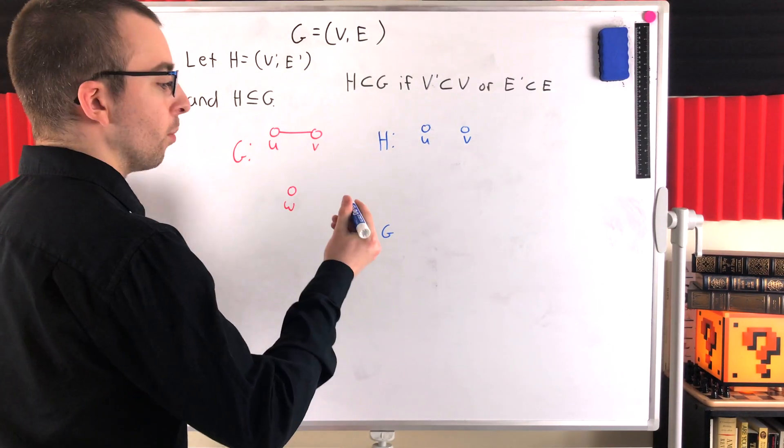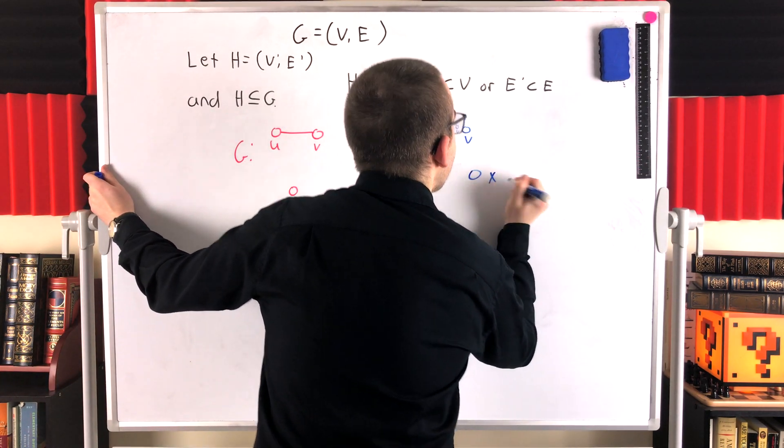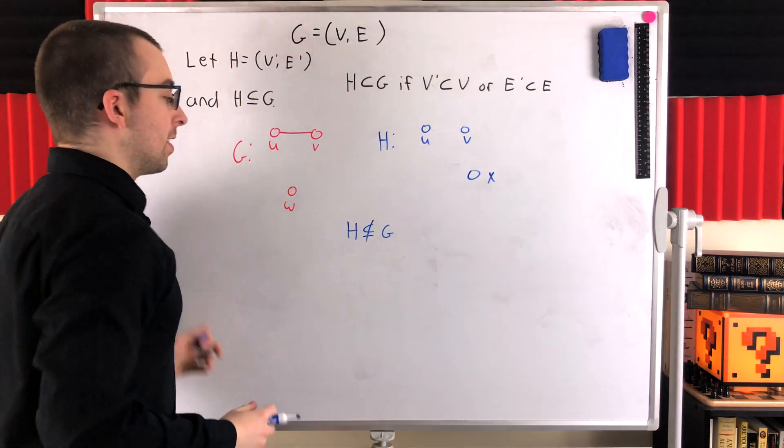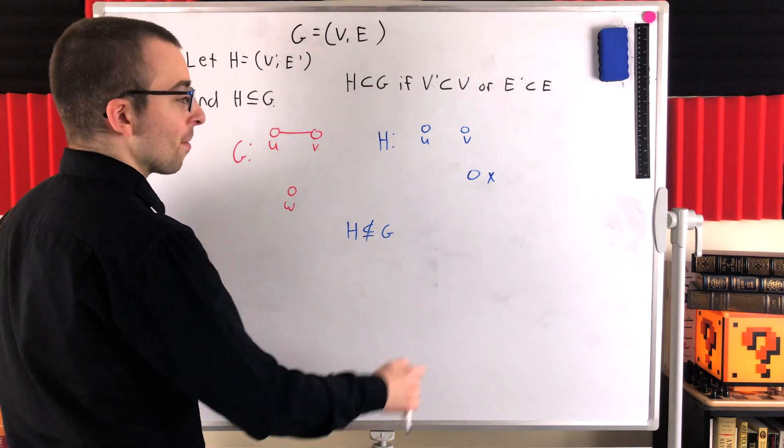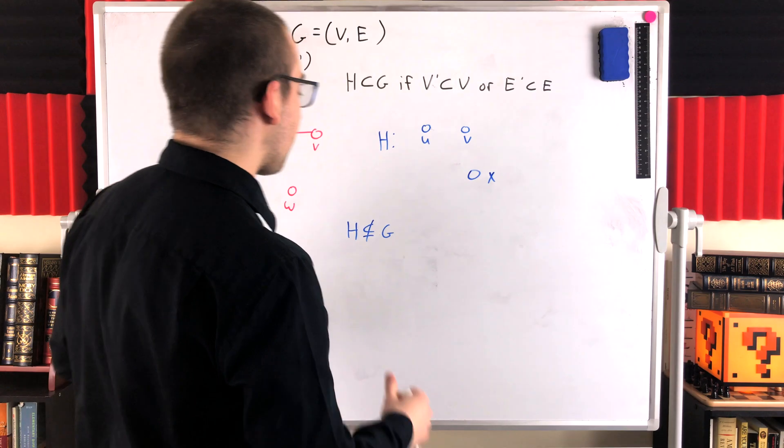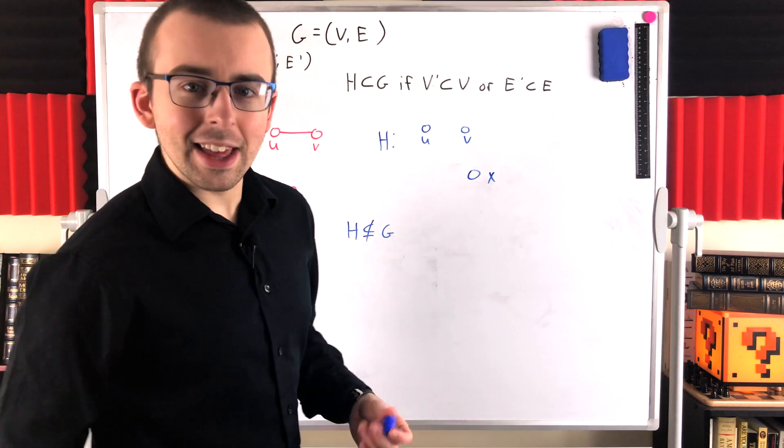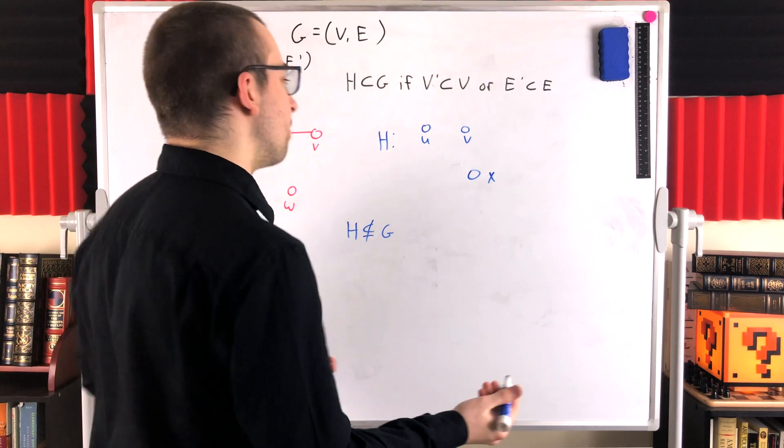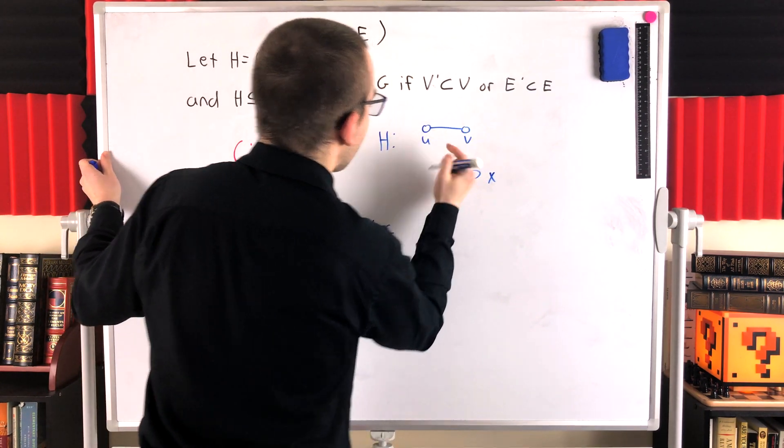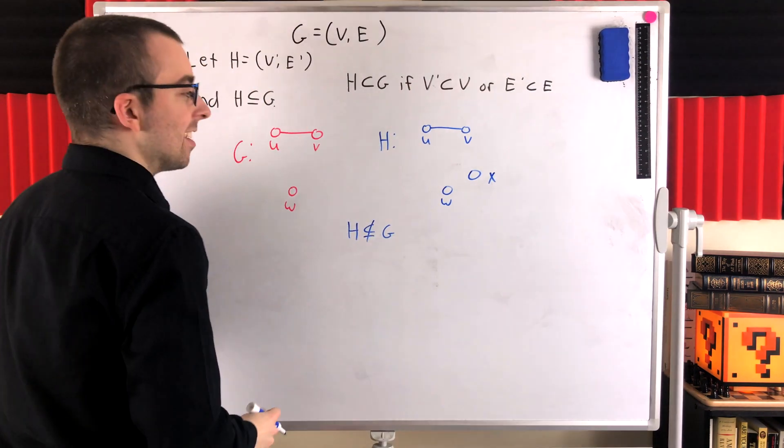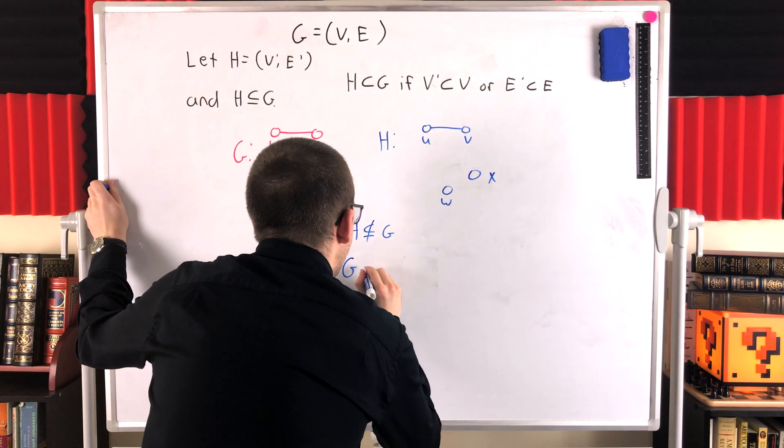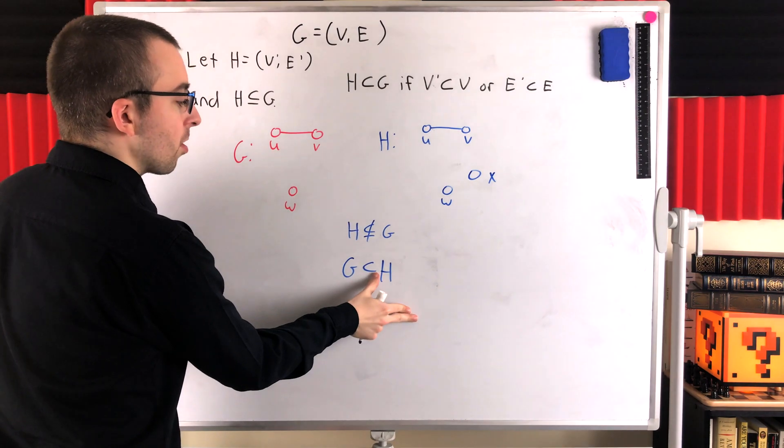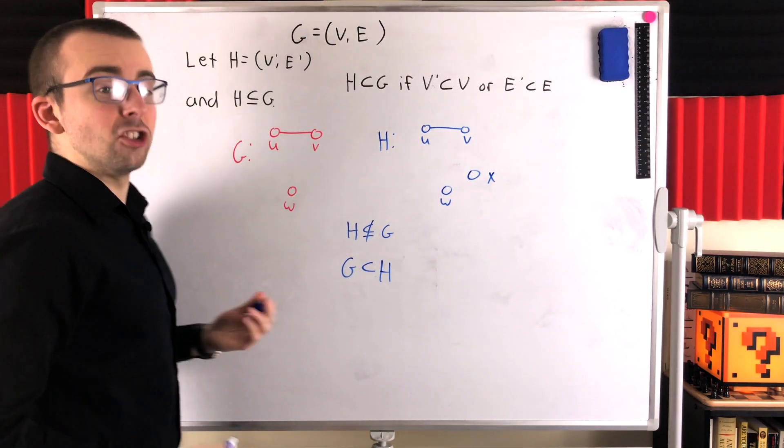Say we wanted to get a little wacky to see some more counter examples. Suppose that H had this vertex X. Then H is not a proper subgraph of G and it's not even an improper subgraph of G because H has this vertex that is not in G. Could we say that G is a subgraph of H then in this case? No, we couldn't say that either because G has this edge that is not contained in H. But if we add the edge from U to V and we add the vertex W back into our graph H then we could say that G is a subgraph of H. Furthermore, G is a proper subgraph of H because H has this extra vertex that G does not.